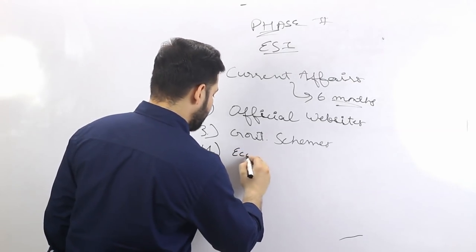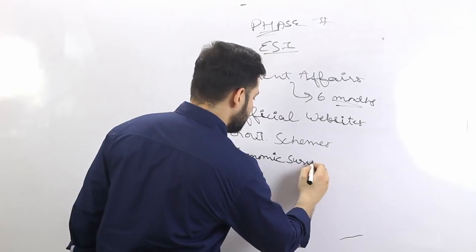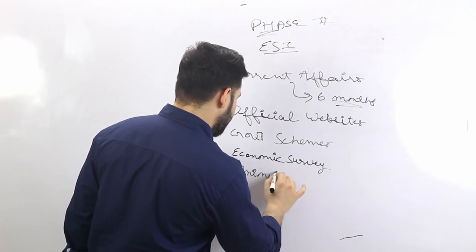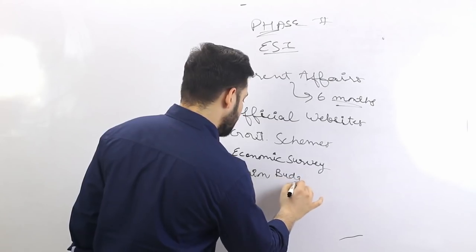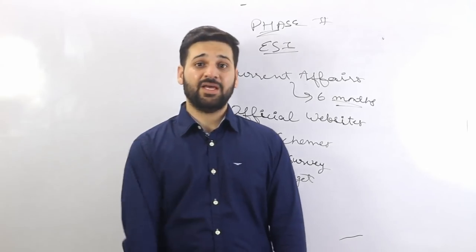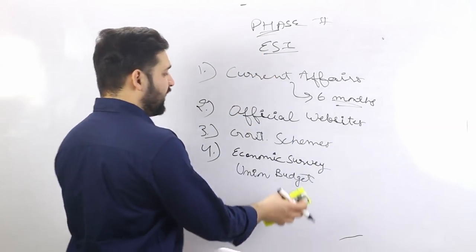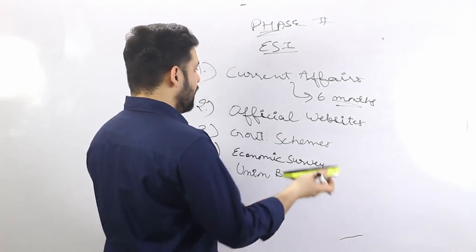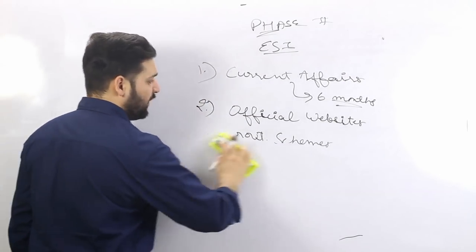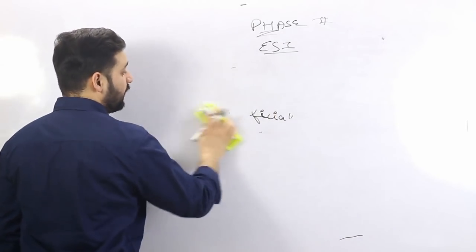Read about the Economic Survey and the Union Budget — both are very important. Whatever reports are published by the Government of India or the RBI are important for the exam. That's all for the ESI paper. We have a specialist teacher for ESI paper, so stay updated and join the RBI Grade B course.